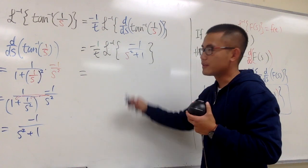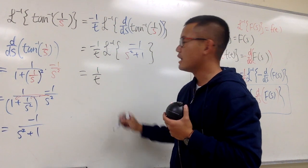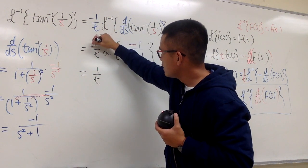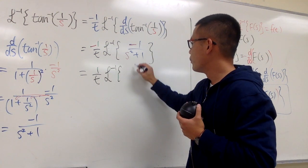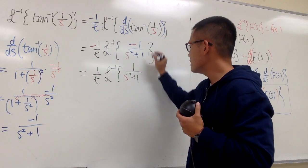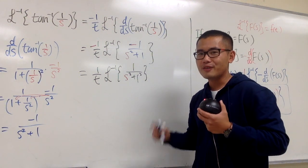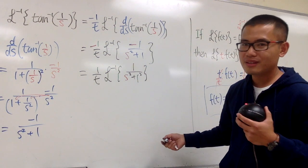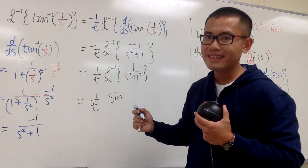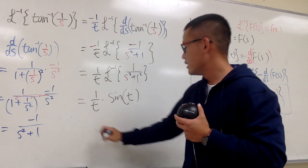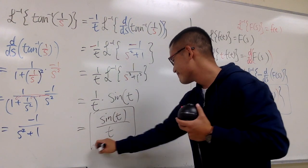Now, negative times negative becomes positive, so we have positive 1 over t out front. The inverse Laplace transform of 1 over s² plus 1 is sine of t. So altogether we get 1 over t times sine of t — that is sin(t)/t. So cool, isn't it? That's it!